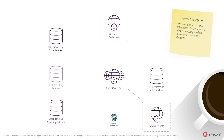The aggregation process runs across all processing workers using the saved cursors in the XDB processing tasks database. Each processing worker retrieves interaction data from the XDB collection service and can pull additional data needed in the aggregation from other sources, for example the reference data service. If the aggregation of a single interaction fails, it is added to the XDB processing pool and will be retried at the end of the historical aggregation.